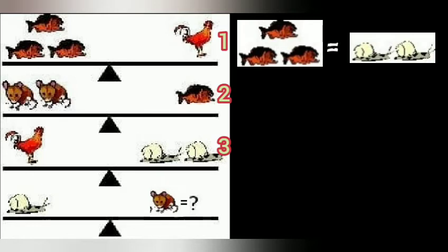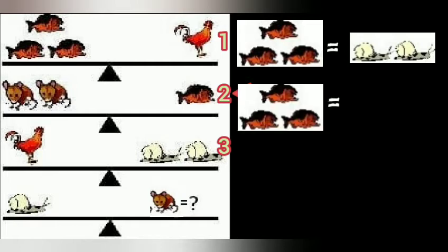Now look at equation number two. One fish is equal to two rats. Therefore, three fish will equal to six rats.